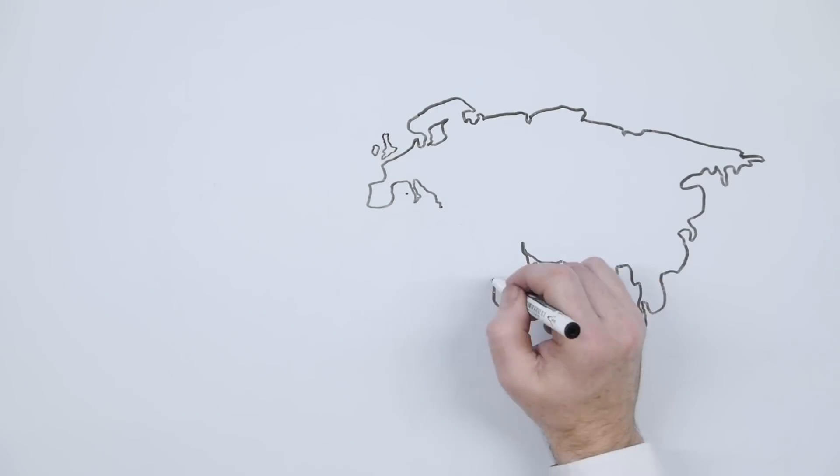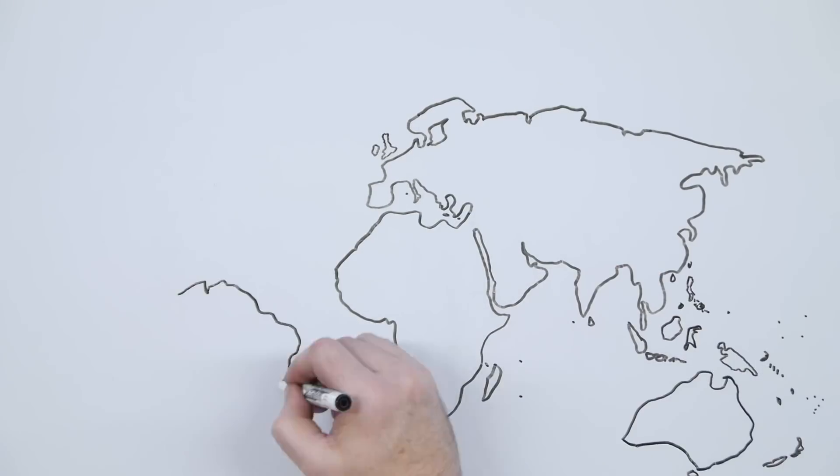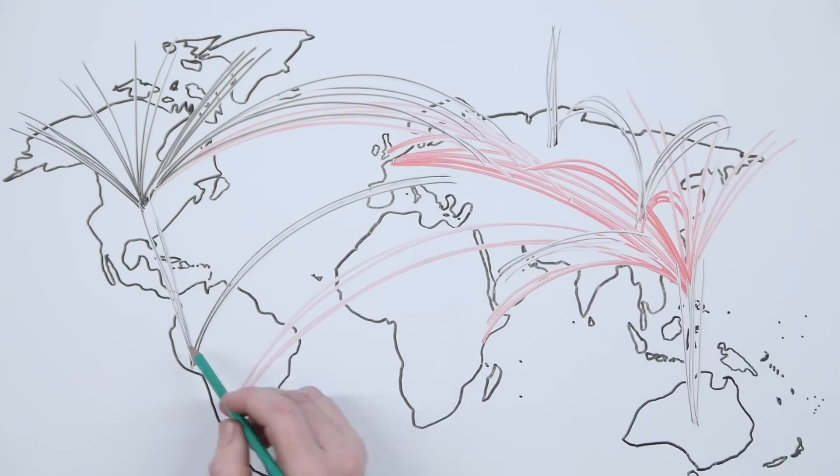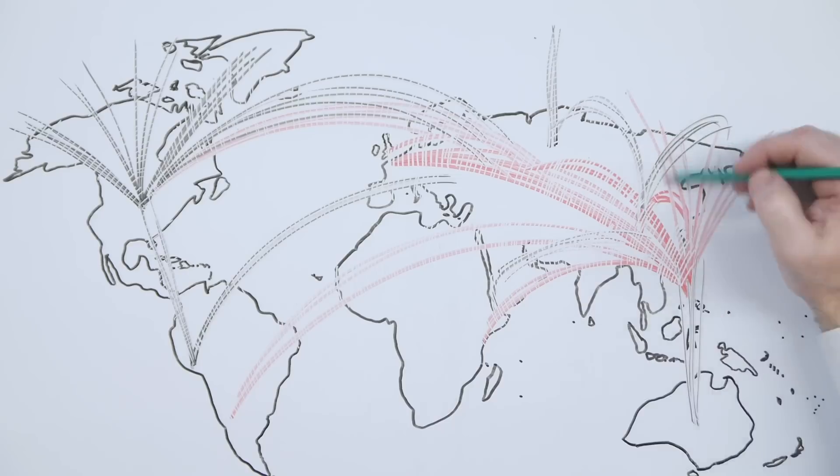Perhaps you've seen the Digital Attack Map, a powerful, real-time data visualization of global DDoS attacks. This was done in collaboration with Google Ideas leveraging Atlas data.